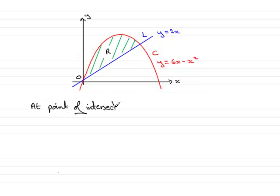What we know is that the y values would be exactly the same, and that would mean that 2x would equal 6x minus x squared. So I'll write that in: 2x must equal 6x minus x squared.